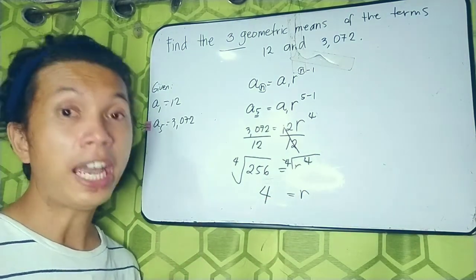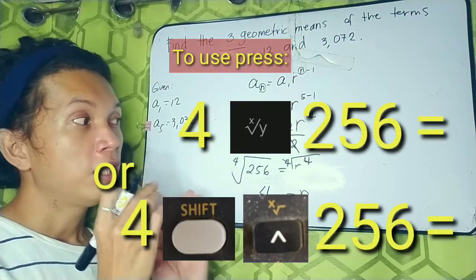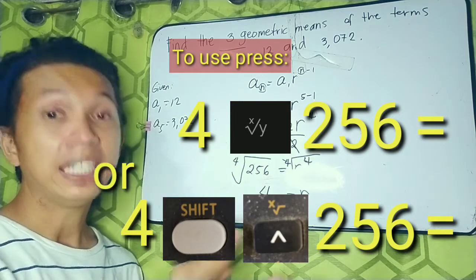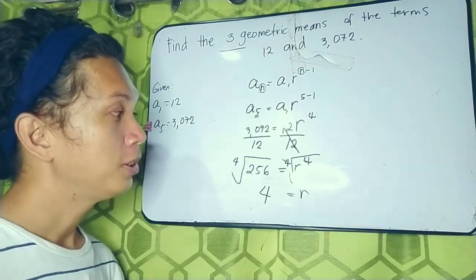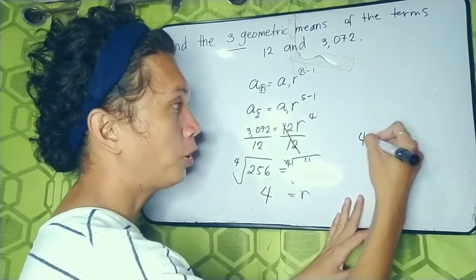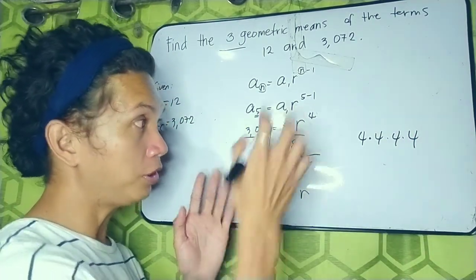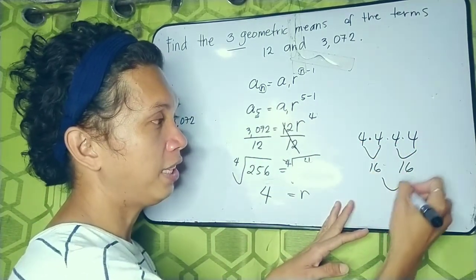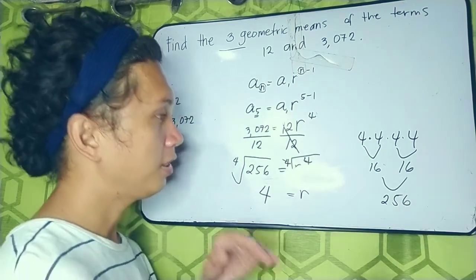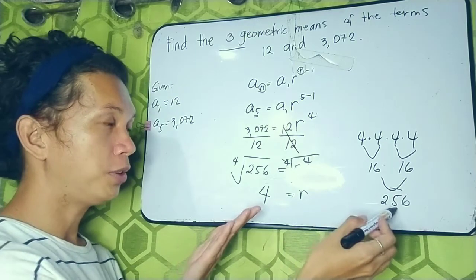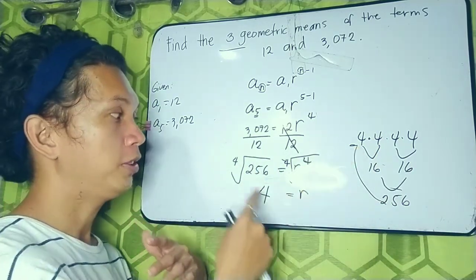You can use your calculator with the appropriate functions to verify this. To check: 4 times 4 times 4 times 4 — first 4 times 4 is 16, then 16 times 16 is 256. So the fourth root of 256 is 4, meaning 4 is the number you multiply by itself four times to get 256. That confirms our common ratio r equals 4.